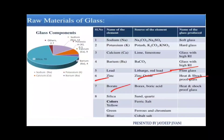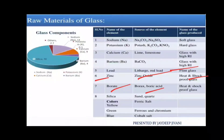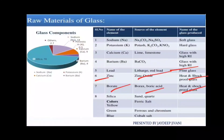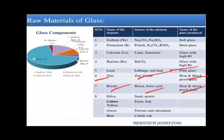The next element is borate. Borate is obtained from borax or boric acid. It is also used for heat and shockproof glass — borate is used where heat and shockproof properties are needed in glass manufacturing.